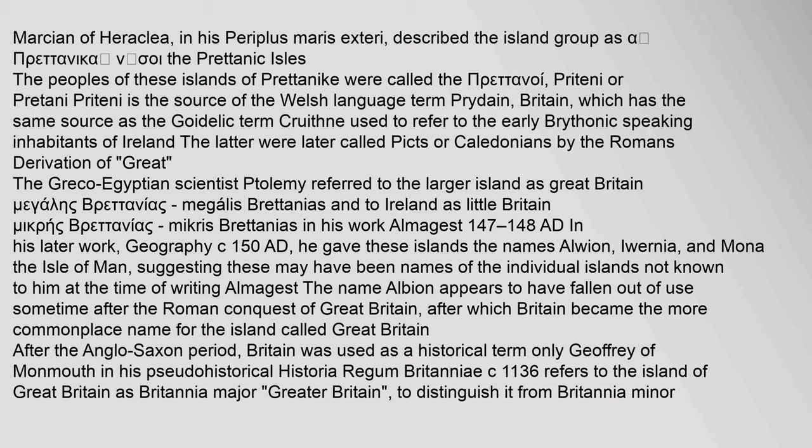Derivation of 'Great': The Greco-Egyptian scientist Ptolemy referred to the larger island as Great Britain (Megale Bretannia) and to Ireland as Little Britain (Mikra Bretannia) in his work Almagest (147–148 AD). In his later work Geography (c. 150 AD), he gave these islands the names Alvion, Ivernia, and Mona (the Isle of Man), suggesting these may have been names of individual islands not known to him at the time of writing Almagest.